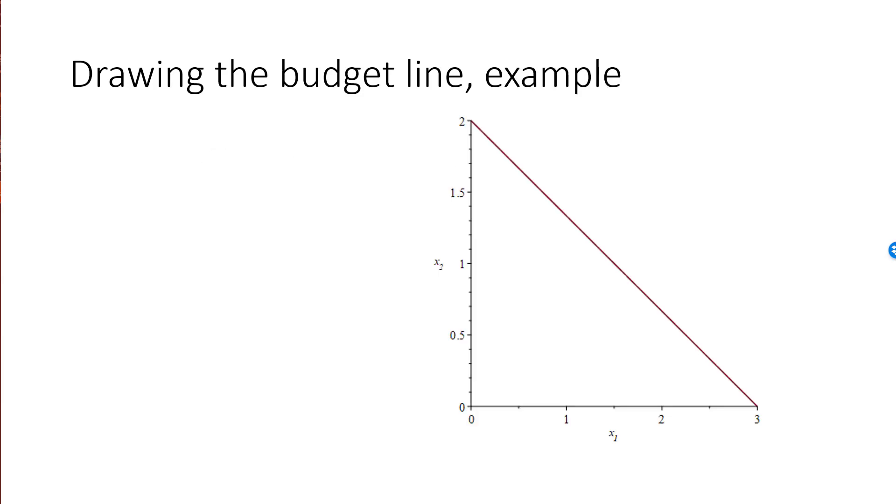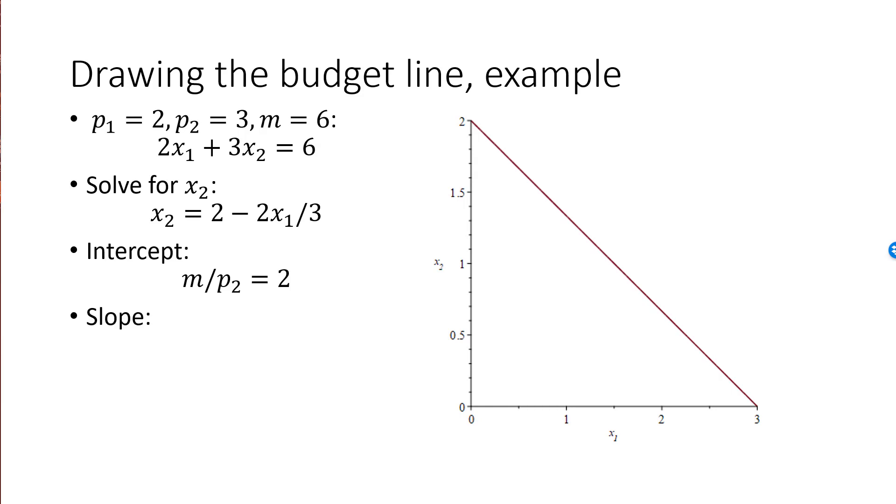As a quick review, here is the example again that we started with. p1 is 2, p2 is 3, and m is 6. We solve for x2. We see that the intercept is 2, which is precisely the value of m over p2. The slope is minus 2 over 3, which is the value of minus p1 over p2. Finally, the intersection with the x-axis will be at x1 equal to 3, which is the value of m over p1.